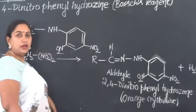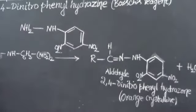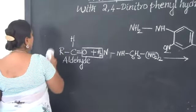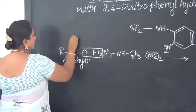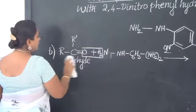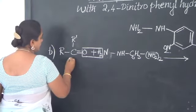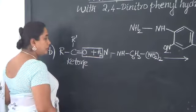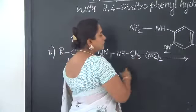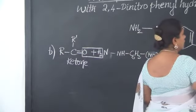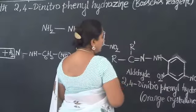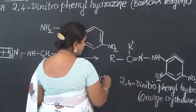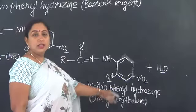In a similar way, even a ketone reacts. The reaction of ketone with Borsch's reagent goes like this where elimination of molecular water takes place when treated with Borsch's reagent. The ketone 2,4-dinitrophenylhydrazone, this product will also be an orange crystalline compound.